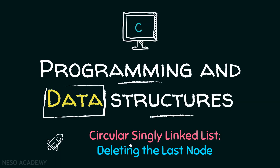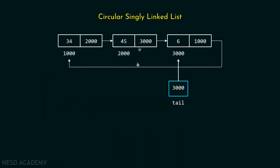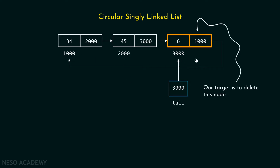In this presentation, we will learn how to delete the last node of the circular singly linked list. Let us suppose we already have this circular singly linked list, and the tail pointer is pointing to the last node of this list.